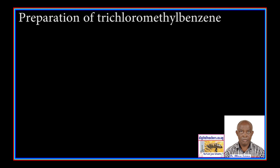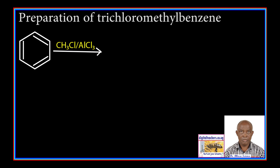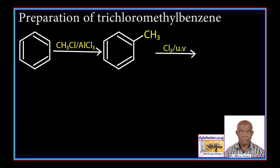Preparation of trichloromethylbenzene: Benzene is reacted with methyl chloride in the presence of aluminum chloride to form methylbenzene. Methylbenzene is reacted with chlorine in the presence of UV light to form trichloromethylbenzene.